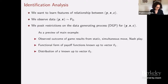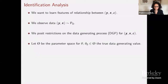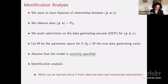We posit restrictions on the data generating process. For example, I'll assume the observed outcome results from static simultaneous move Nash play — that's a restriction on behavior. I'll assume I know the functional form of the payoffs up to some finite-dimensional vector theta one, and that the distribution of unobservable payoff shifters is known up to vector theta two. I want to learn theta one and theta two, and possibly features of the joint distribution of the unobservables. The key question of identification analysis is: what can be learned about theta from the observed data and the maintained assumptions?